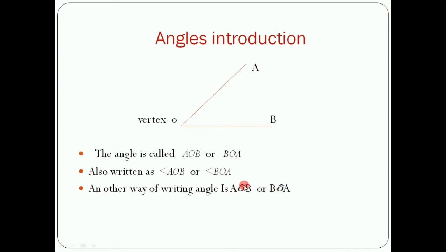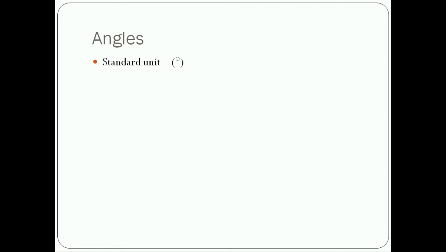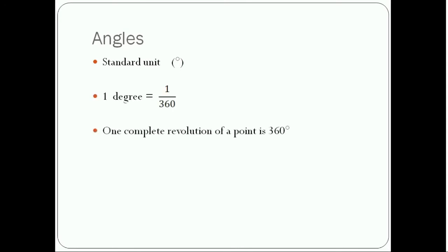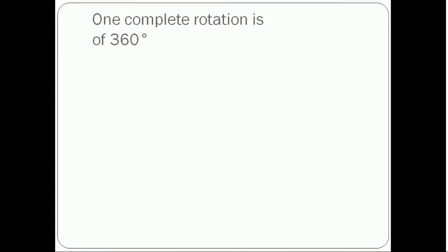Now I will tell you about the unit of the angle. The standard unit of angle is degree. One complete revolution of a point is 360°. That means when a point rotates, it completes a revolution of 360 degrees. You can see one complete rotation is 360 degrees.